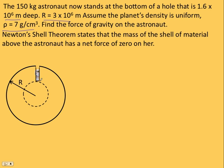What Newton said is only the material below you has a net force of gravity. This material is pulling on the astronaut at the bottom of the hole, but if you add up the contributions of all that material, the net force is zero. So the astronaut's standing here, the gravity of the material above him pulls up, but the net force of all the gravity below pulling down cancels that out. So we only need gravity from this interior volume here.